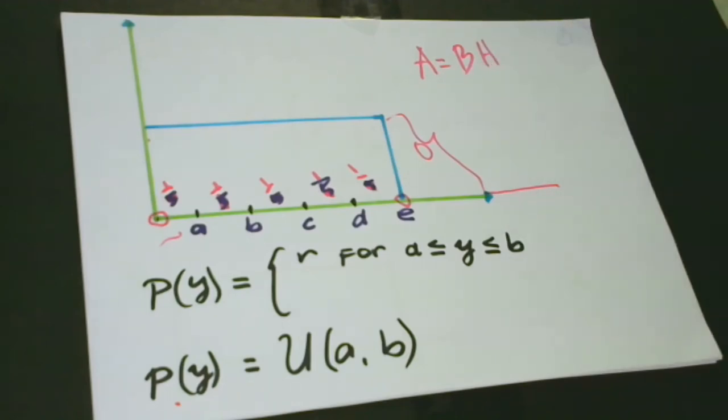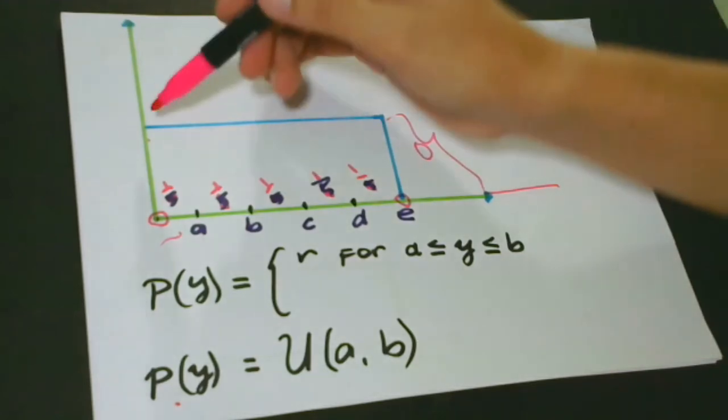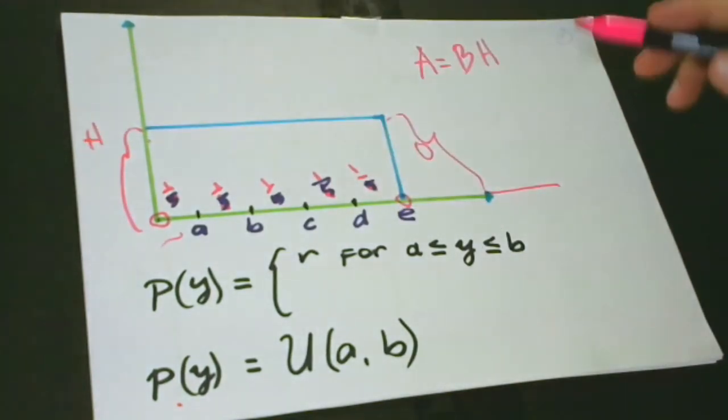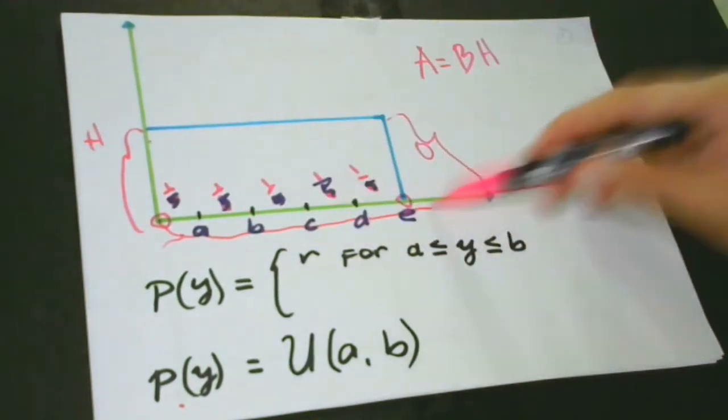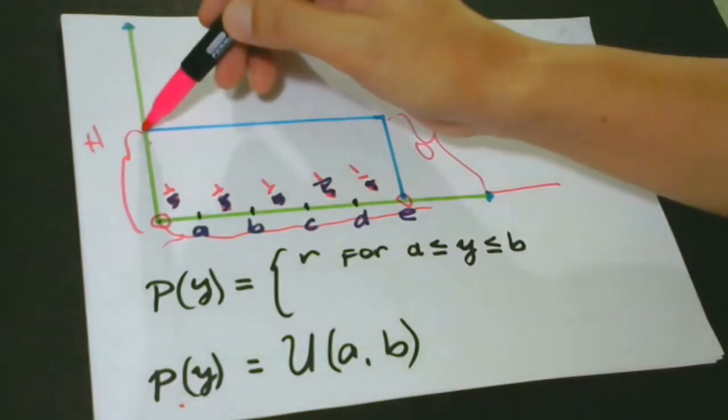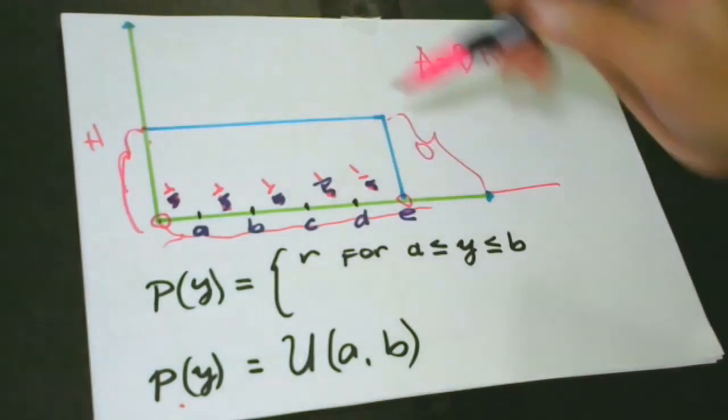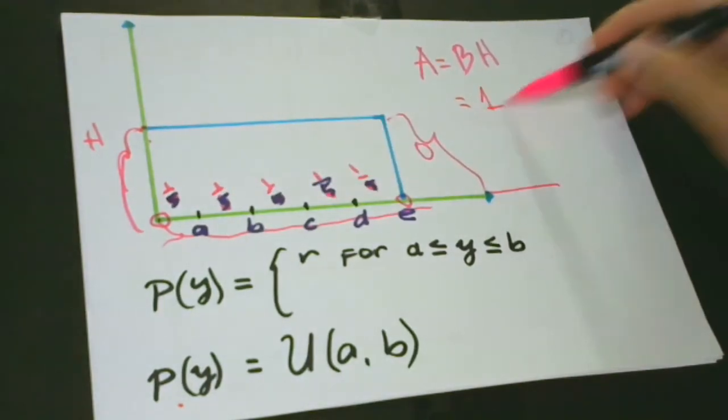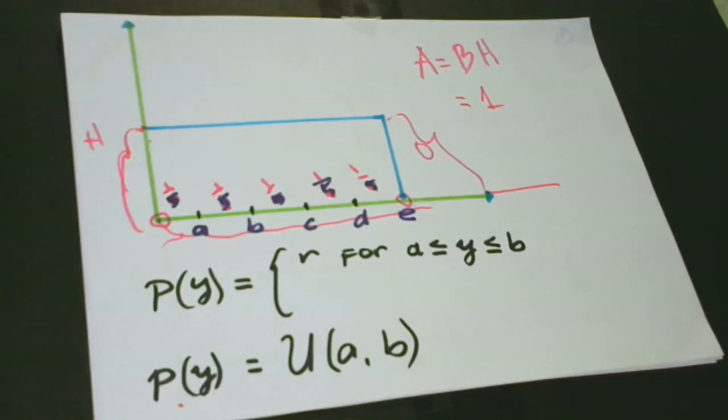So, maybe you would ask me, where is the base and the height in here? This is, of course, the height, or we could see the length, then the base is here. So that means when we multiply this one, this height, and then this base, the answer is 1. Again, we will have this one later. We will prove later that the area is equal to 1 when we multiply the base and the height.